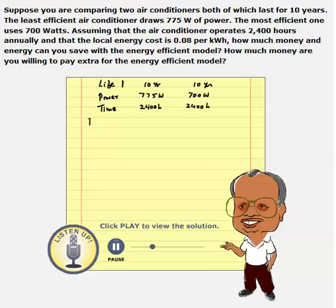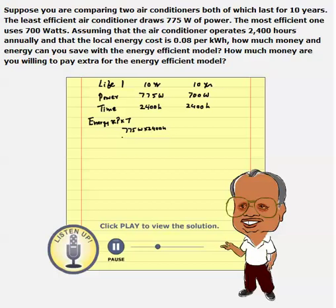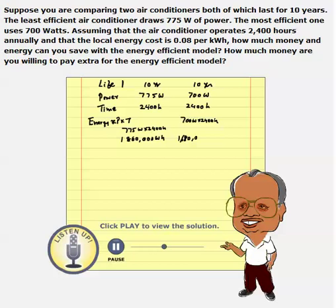The energy consumed is given by power multiplied by time of usage. So in this case, it would be 775 watts multiplied by 2,400 hours, and that will be 1,860,000 watt-hours. And for the other air conditioner, it would be 700 watts times 2,400 hours, which gives 1,680,000 watt-hours.